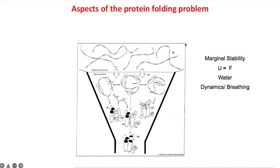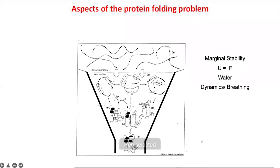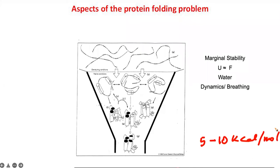The process we are talking about goes from an unfolded state through partially folded states to finally a unique folded state, which usually has a stability of around 5 to 10 kilocalories per mole — marginally stable and can be disrupted by even breaking a single disulfide bond.